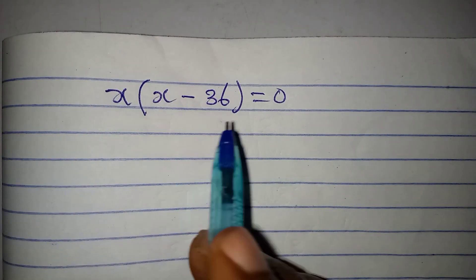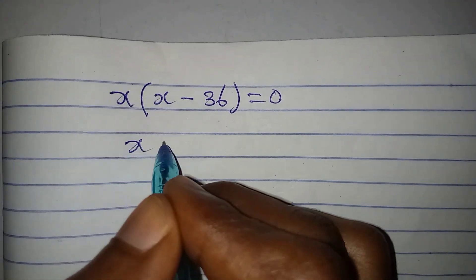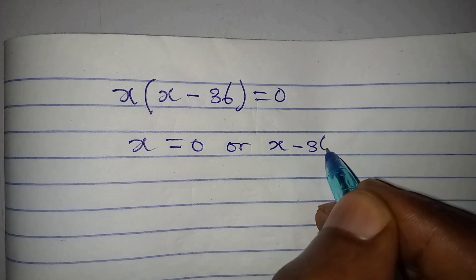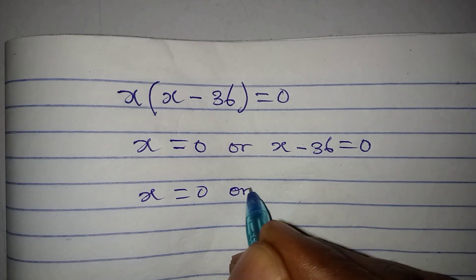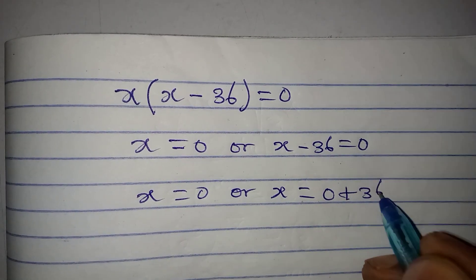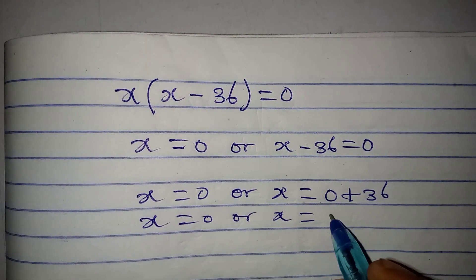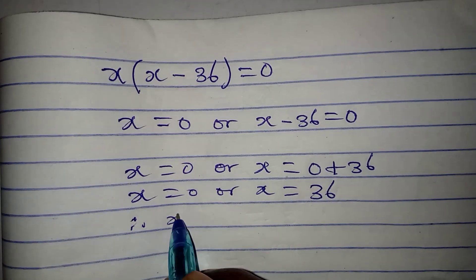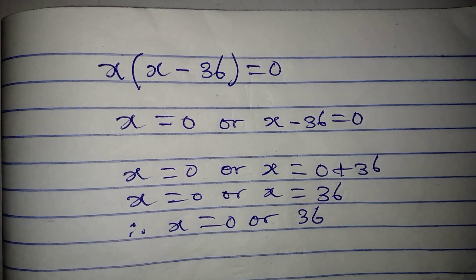x is common to both terms, so factoring out x gives x times (x minus 36) equals 0. Applying the zero product rule: either x equals 0, or x minus 36 equals 0, giving x equals 36. So x equals 0 or x equals 36. Now let's go back to the original equation to check.